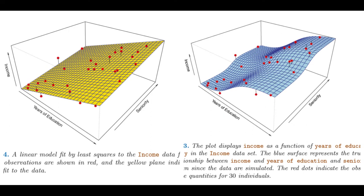Now there is an image on the screen you can look into. On the left-hand side of your screen there is a linear model, and on the right-hand side of your screen there is the real relationship between the income and the years of education and seniority.